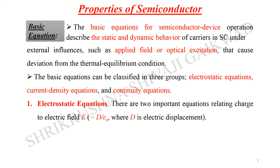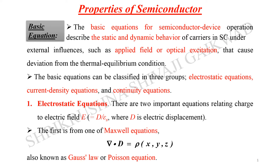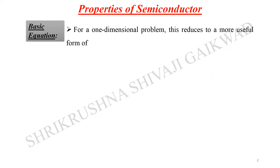The electric field can be represented as D divided by epsilon_s, where D is the electric displacement. From Maxwell's equation, the gradient of the electric displacement current gives us the charge density: del·D = rho, where rho is a function of x, y, z. This is also known as the differential form of Poisson's equation (Gauss's law).